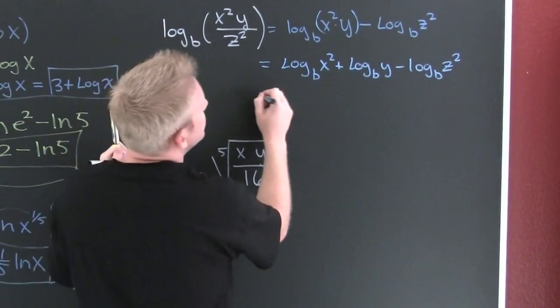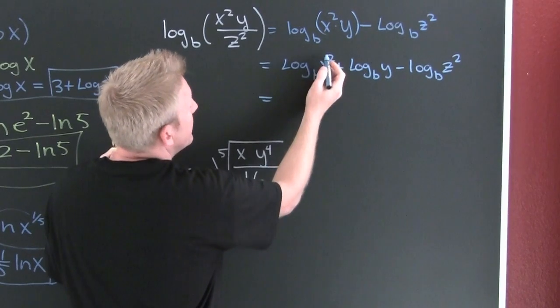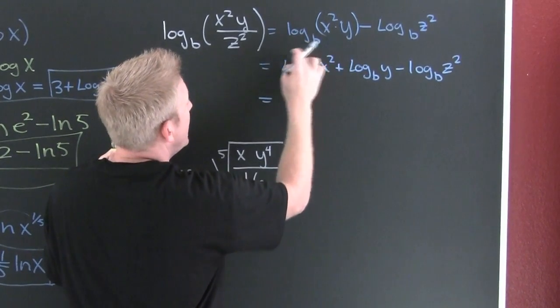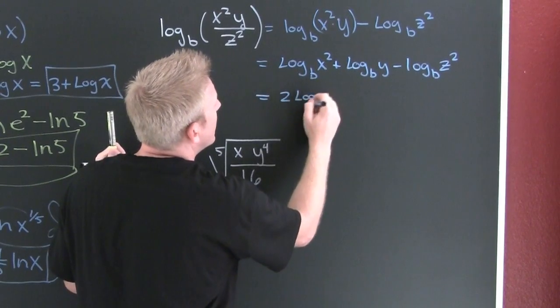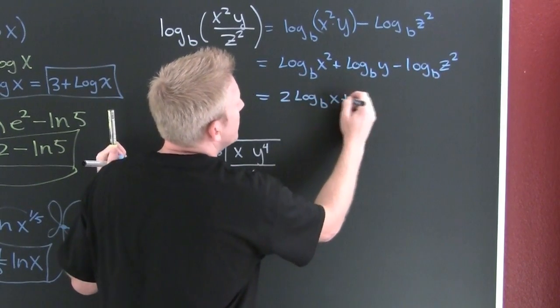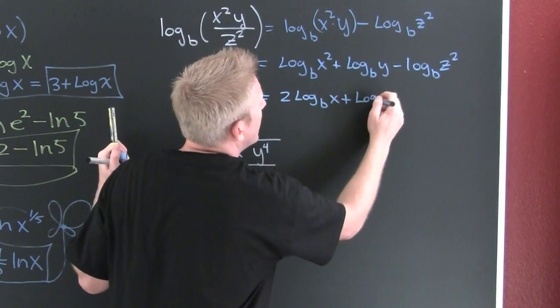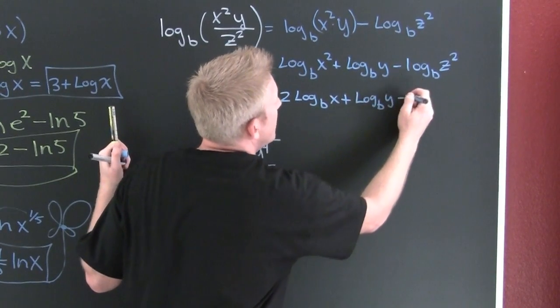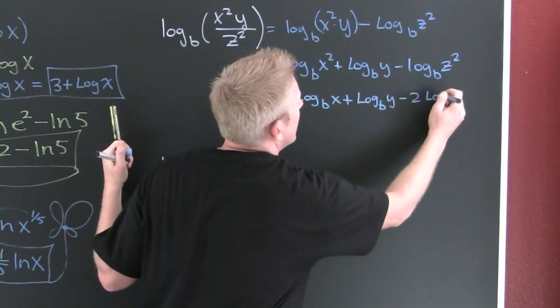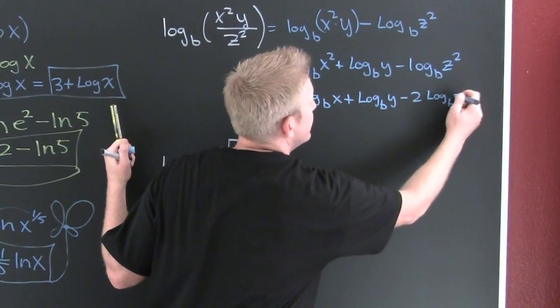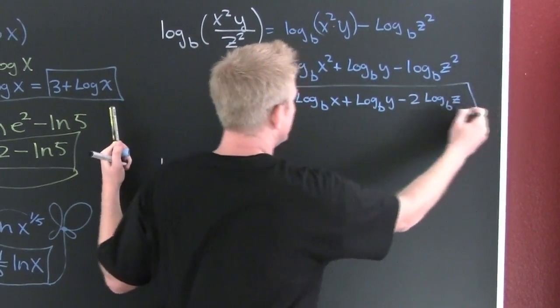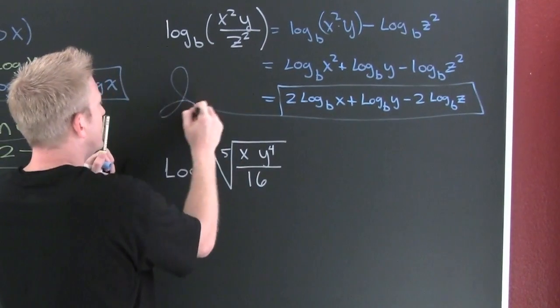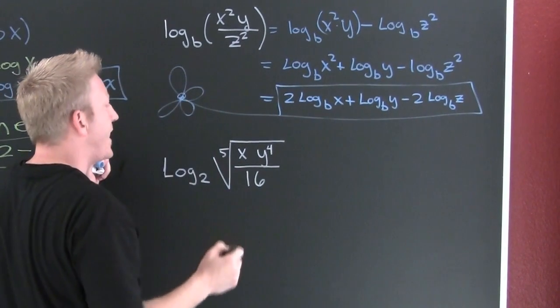Finish him. Here I'm going to use that property where if I have my argument raised to a power, I can bring it down front. 2 log base b of x plus log base b of y minus 2 log base b of z. And a flower.